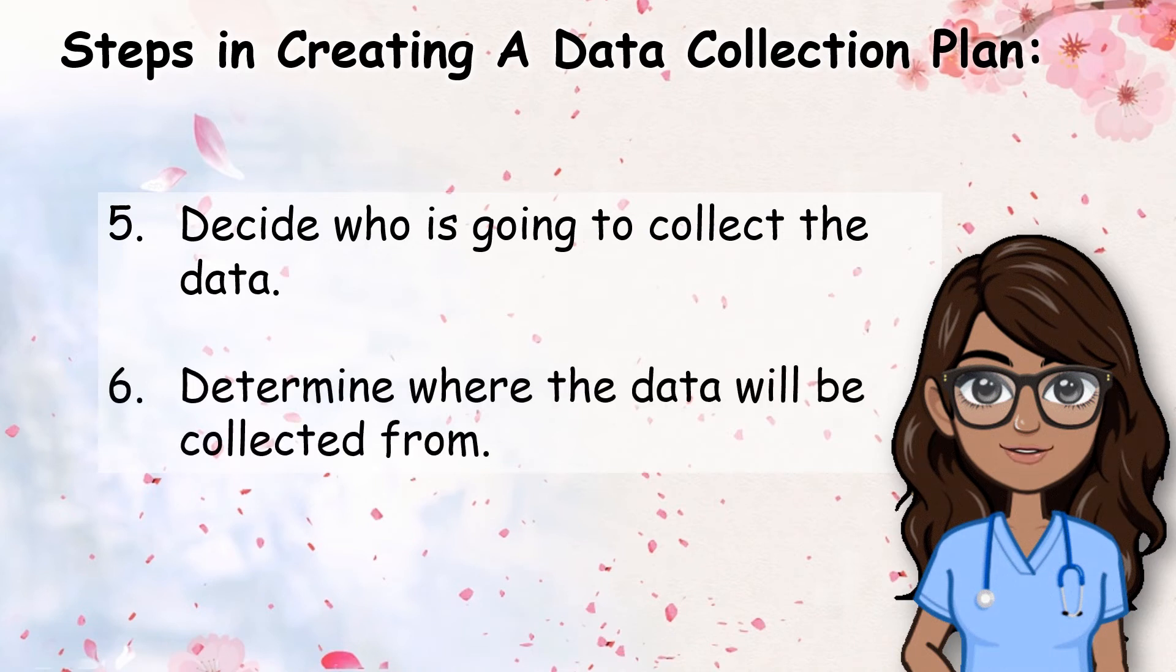Step six is to determine where the data will be collected from. There are three broad strategies for obtaining data: collecting the data yourself, using existing data which may come from government data, organization data, data repositories, or existing research studies, or combining these strategies together.